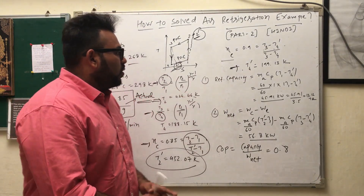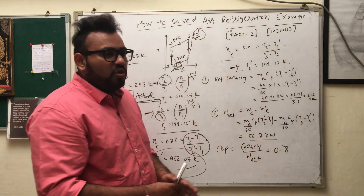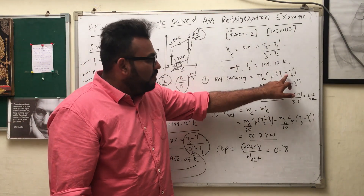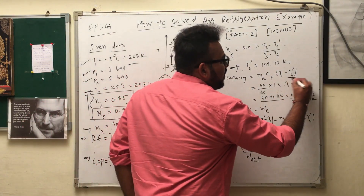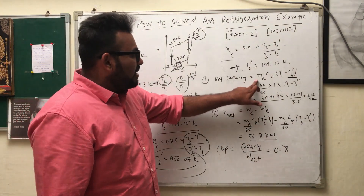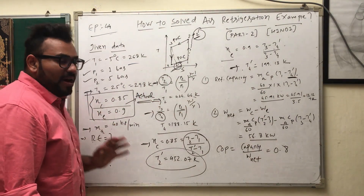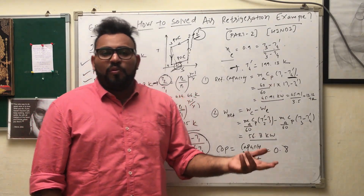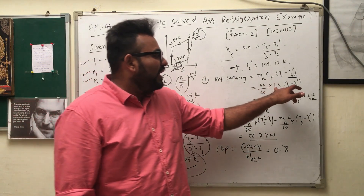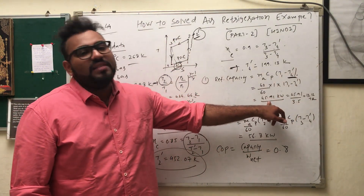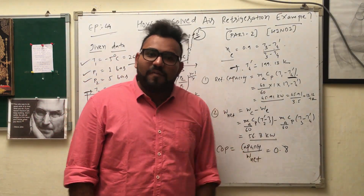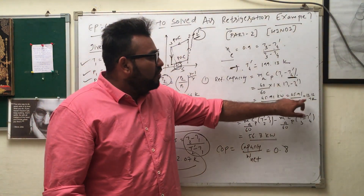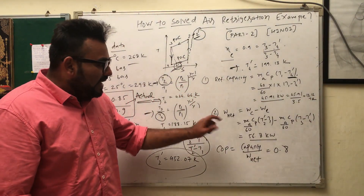Now find the refrigerating capacity. If it were a theoretical cycle with no efficiency given, we would use (T1 − T4). But in the actual cycle, refrigerating capacity = m × Cp × (T1 − T4_dash) / 60, giving the answer in kilowatts (dividing by 60 converts kg/min to kg/s, Cp ≈ 1.005 kJ/kg·K). If asked in tons of refrigeration, use 1 TR = 3.5 kW and divide.